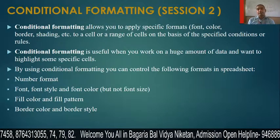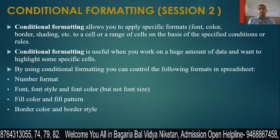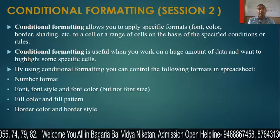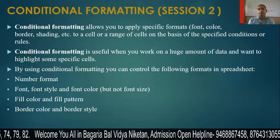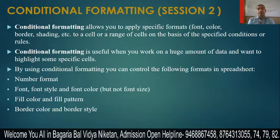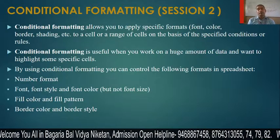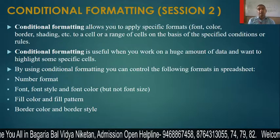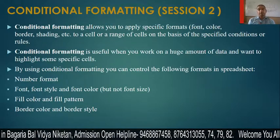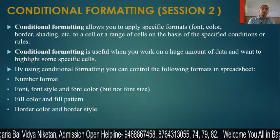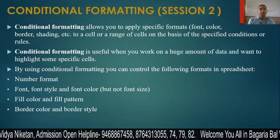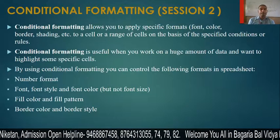For example, if a child scores below 60%, their mark is shown in red color. Or if someone's name is Ankit, that name is displayed in red. This means you can format cells in a specific way based on conditions applied to a cell or range of cells.